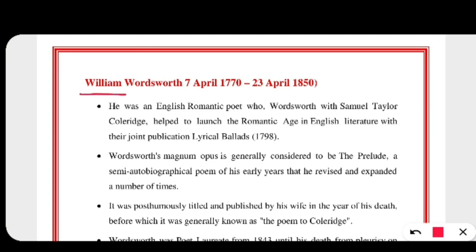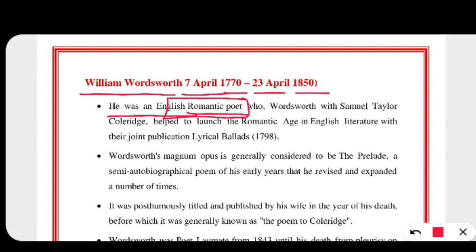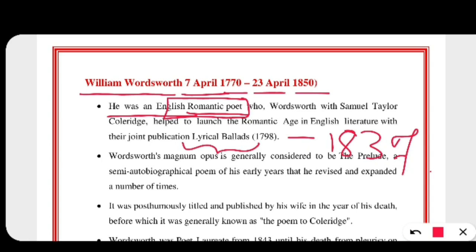William Wordsworth was born on 7th April 1770 and died on 23rd April 1850. He was an English Romantic poet. The Romantic period was between 1798 to 1837. This particular period was started by the publication of Lyrical Ballads, for which Wordsworth and S.T. Coleridge collaborated.